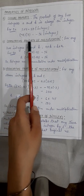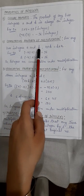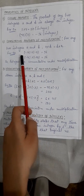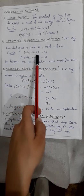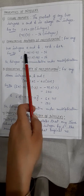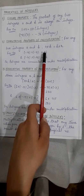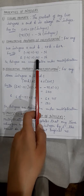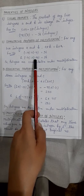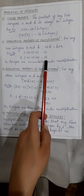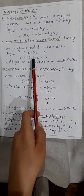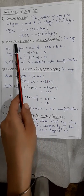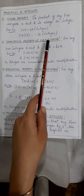The second property is the commutative property of multiplication. For any two integers a and b, if you change the order of multiplication, the answer remains the same. Here, minus 14 multiplied with minus 4 gives 56 with a positive sign. And minus 4 multiplied with minus 14 also gives 56 with a positive sign. So you can see answers are coming the same — commutative property is applicable for multiplication of integers.